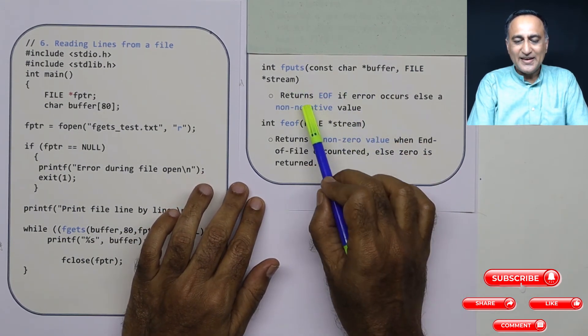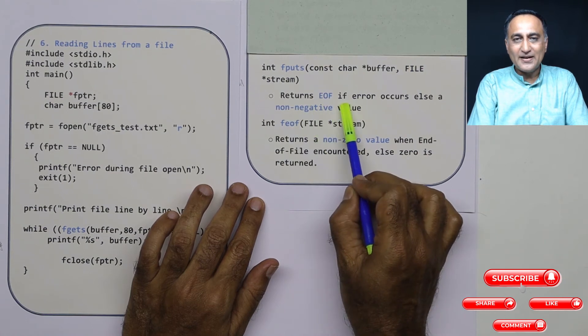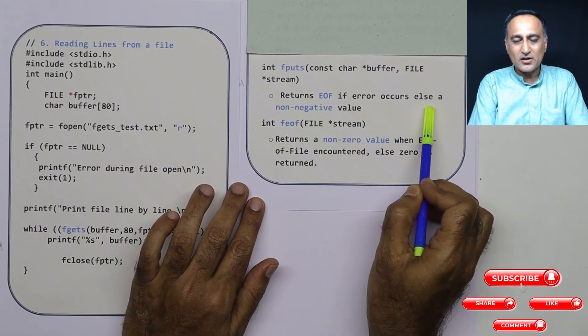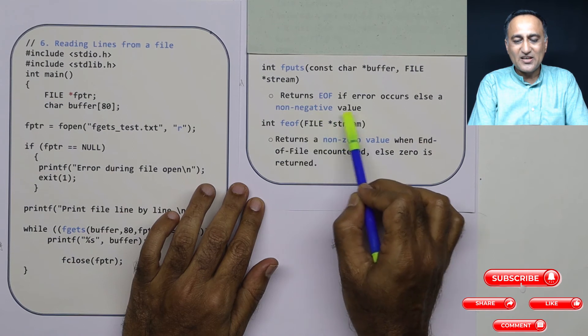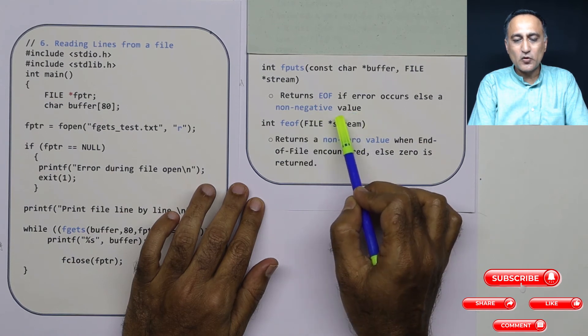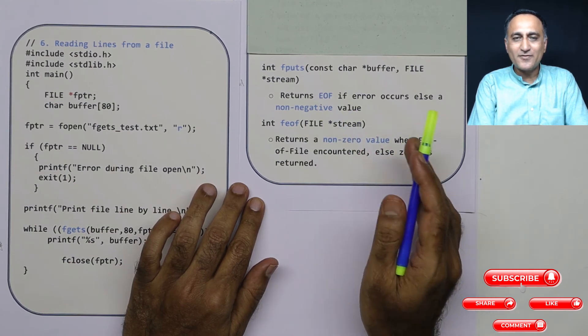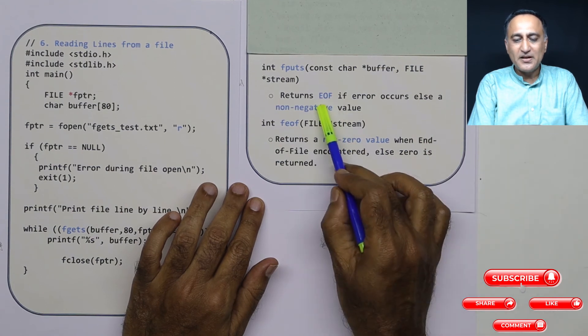Now fputs, it will return end of file if there is an error, or else a non-negative value. So it will return a non-negative value if the writing is happening fine. But the minute there is some problem, it will return end of file.